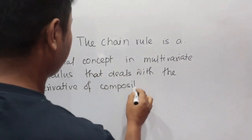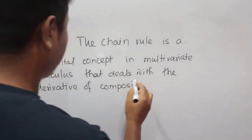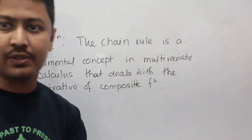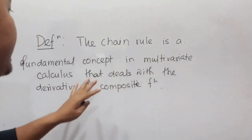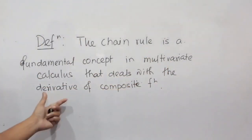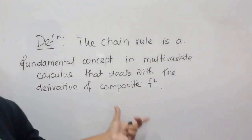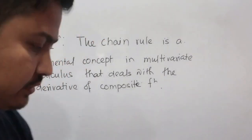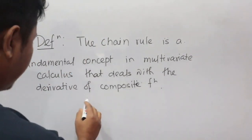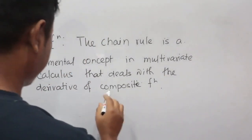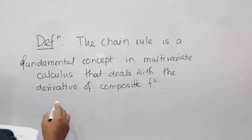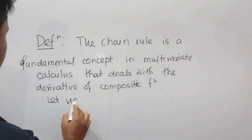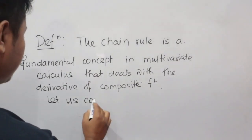The chain rule is a fundamental concept which deals with the derivative of a composite function. To understand this definition, we need to know what a composite function is. So let us consider two functions.